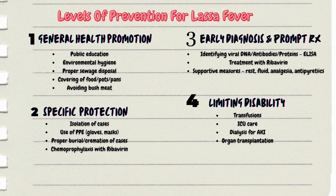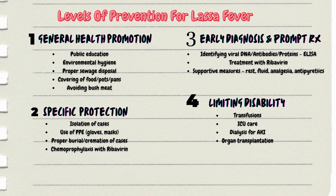For limiting disability with Lassa fever, we need to anticipate complications. Since it is a viral hemorrhagic fever, patients can bleed, so transfusion is one key strategy. Another strategy is ICU care and organ support, as these patients tend to develop multi-organ failure in severe disease. Dialysis is used for renal support, and in extreme cases, organ transplantation such as liver or kidney transplant may be required.